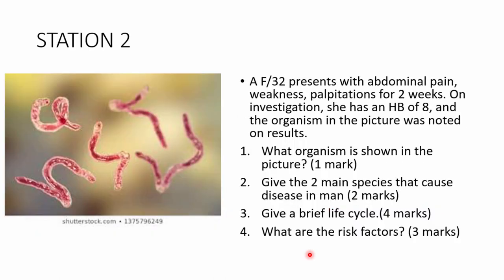Station 2: A 32-year-old female presents with abdominal pain, weakness, and palpitations for two weeks. On investigation her Hb is 8, and an organism is noted in the picture. Part 1: What organism is shown? Part 2: Give the two main species that cause disease in humans. Part 3: Give a brief life cycle. Part 4: What are the risk factors? Pause the video now.